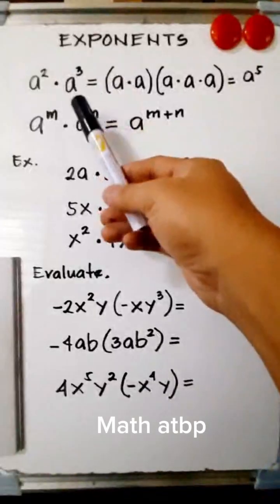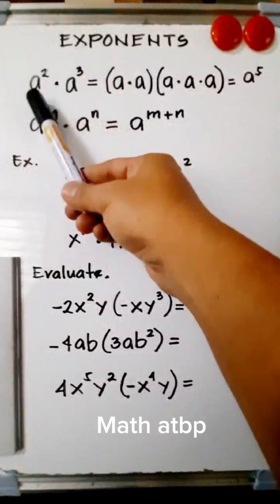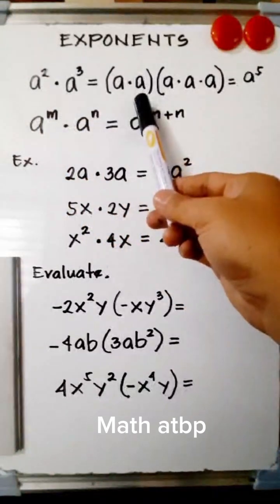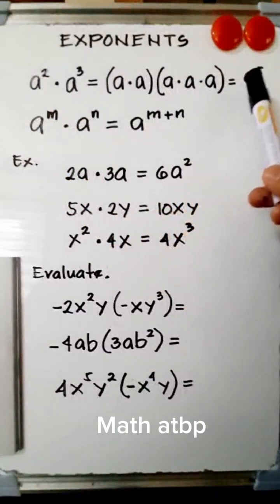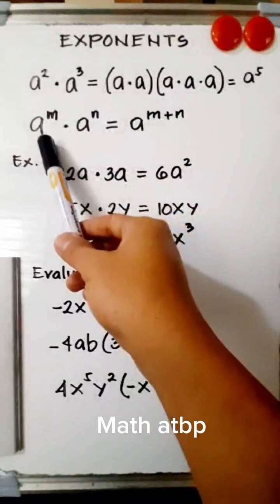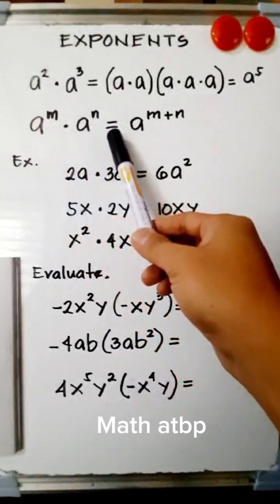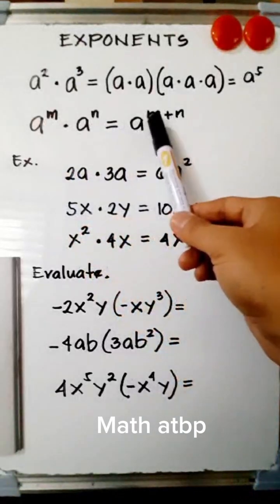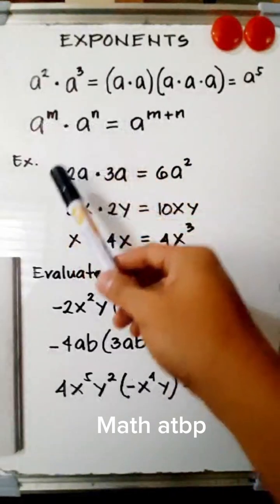Now we have multiplication of powers. If we have a squared times a cubed, that is simply equal to a times a times the quantity a times a times a, which equals a raised to 5. So if we have a raised to m times a raised to n, that equals a raised to m plus n. We add the powers if they have the same base.